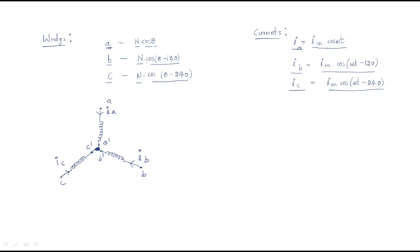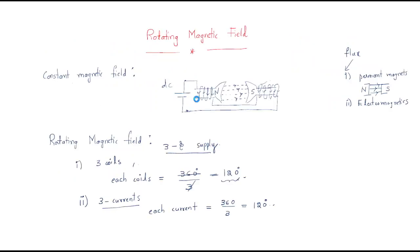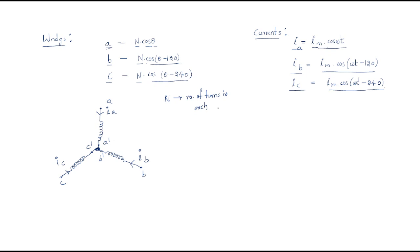When we give the supply like this, we should define N and IM. Here N is the number of turns in each phase. Theta (θ) is the space angle — how much space is required for these turns. After 120 degrees B starts, and after another 120 degrees C starts. IM is the maximum current value, and ωt is the time angle in radians.